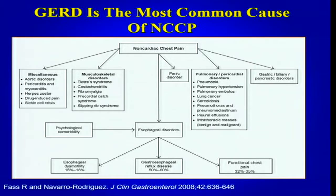There are many reasons why patients have non-cardiac chest pain, and many of them are not related to the gastrointestinal tract — including musculoskeletal disorders, pulmonary and pericardial disorders, and even gastric, biliary, and pancreatic disorders that can present exclusively with chest pain. Panic disorder is one of the most common psychiatric disorders presenting with chest pain, especially acutely. Among esophageal disorders, by far the most common cause is gastroesophageal reflux, followed by functional chest pain, and then a small subset with esophageal dysmotility.